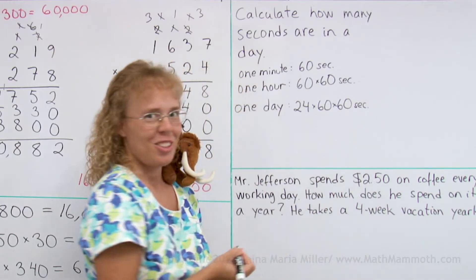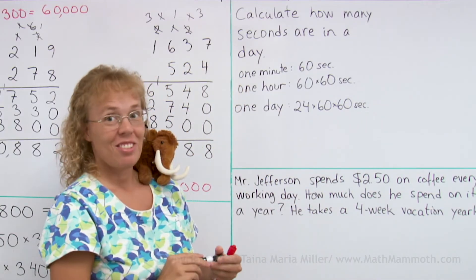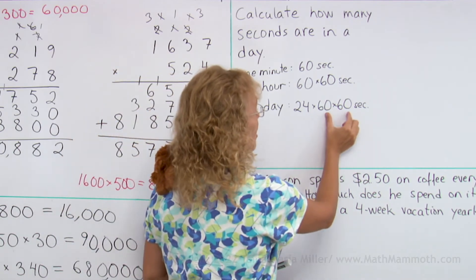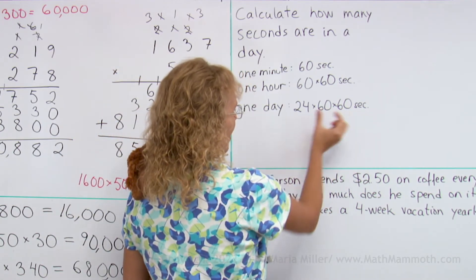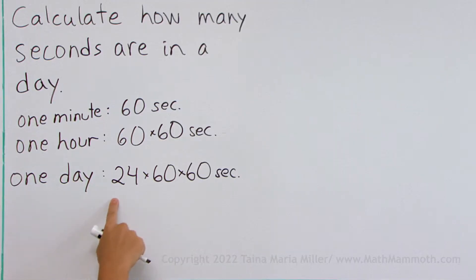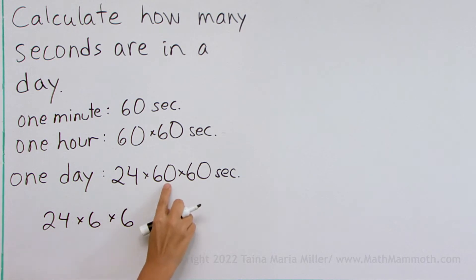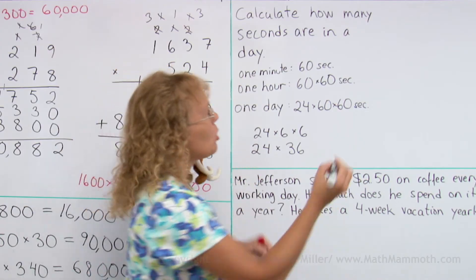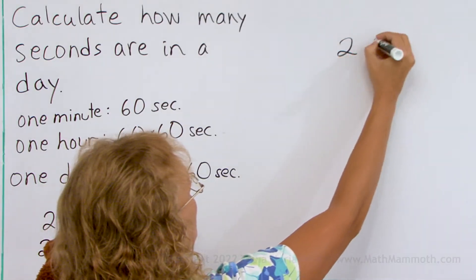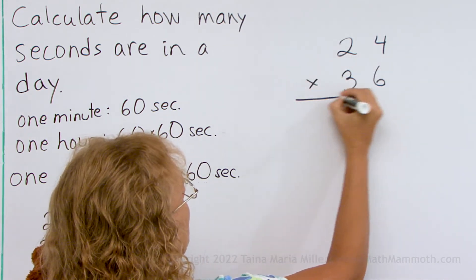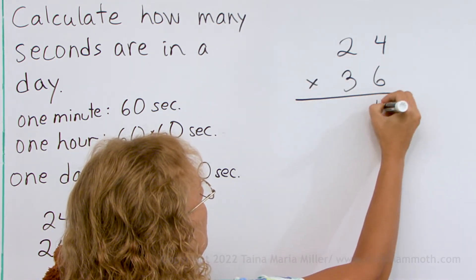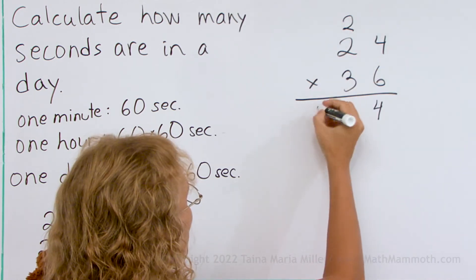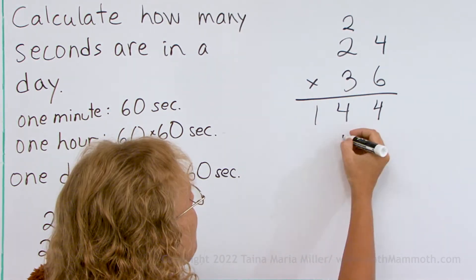That's our task, and it isn't nearly as difficult as it looks because of those zeros. We just need to do 24 times 6 times 6, then tag two zeros on the end. This is the same as 24 times 36, and that's the multiplication we'll do here.